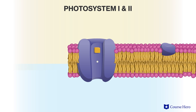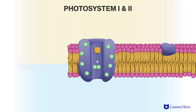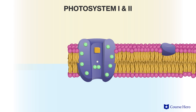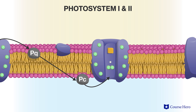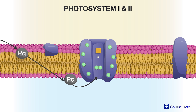Each photosystem consists of a light-harvesting complex, which is made up of a group of pigment molecules surrounding a reaction center complex. The reaction center complex consists of an electron acceptor next to a special pair of chlorophyll molecules. When light strikes one of the chlorophyll pigment molecules in the light-harvesting complex, it excites an electron to a higher energy state. That electron then drops back to its initial state, which releases energy, exciting an electron in the next chlorophyll.